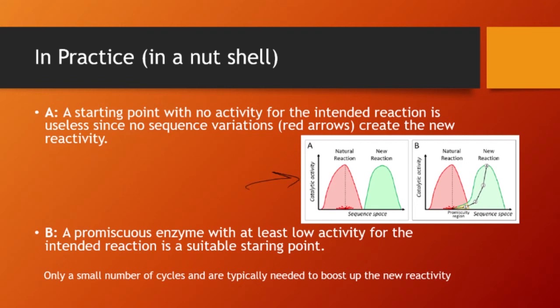This graph shows the concept: Graph A shows a natural reaction. If an enzyme cannot do any of the new reactions — if there's no overlap between the natural and the new reaction — there's no point in mutating that enzyme. You don't want to mutate a protease to cover functions of an ACE2 enzyme — they're completely different. But if there is some type of cross-reaction on the original protein, it is worth trying to direct its evolution toward higher activity for the new reactions.